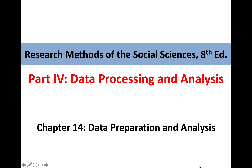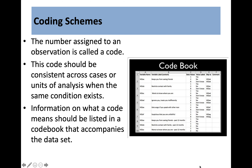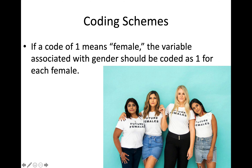Data preparation and analysis, chapter 14. Coding schemes: the number assigned to any observation is called a code. This code should be consistent across cases or units of analysis when the same condition exists. Information on what a code means should be listed in a code book that accompanies the data set. This has more to do with qualitative research, though it can also be quantitative. If a code of one means female, the variable associated with gender should be coded as one for each female.